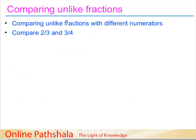Now let us take the case when we have different numerators. For unlike fractions, the denominators are also going to be different. So we have to compare 2/3 versus 3/4. Since the numerators are different, we will use an important result from like fractions: if the denominators are the same, we just compare the numerators. So we write equivalent fractions for both and choose those with the same denominator.